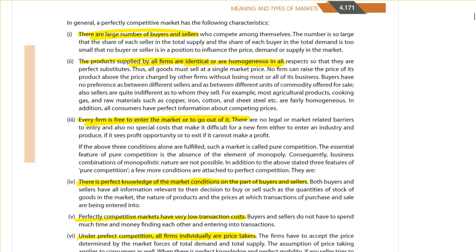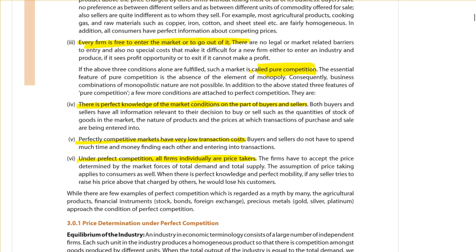When all three features are satisfied — large number of buyers and sellers, identical products, and free entry and exit — we call it a pure competition market. Moving further to perfect knowledge of market conditions on the part of both buyers and sellers: this implies that both buyers and sellers have all the relevant information they need for buying and selling the product or to enter into these transactions.